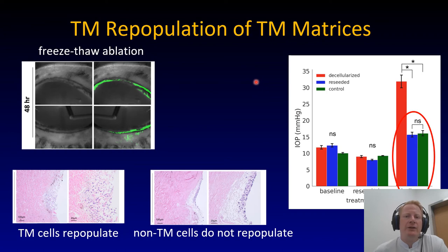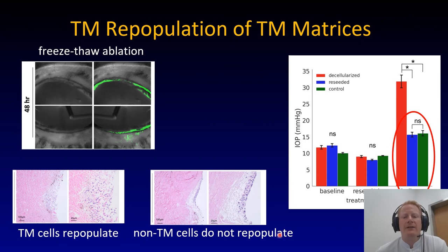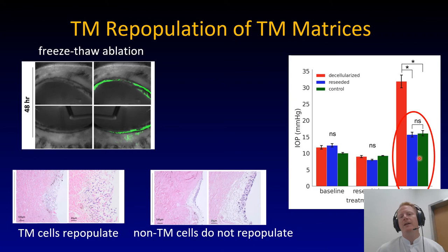TM repopulation of TM matrices is a model we developed using freeze-thawing. These transduced cells disappear; one can use trabecular meshwork cells to repopulate the structure. They migrate into the trabecular meshwork beams. Other cells don't do this — CRFK cells stay at the surface and do not restore the function. The restoring of function you can see here — reseeded cells restore outflow that is somewhat normal, though a little higher perhaps, but not glaucomatous.